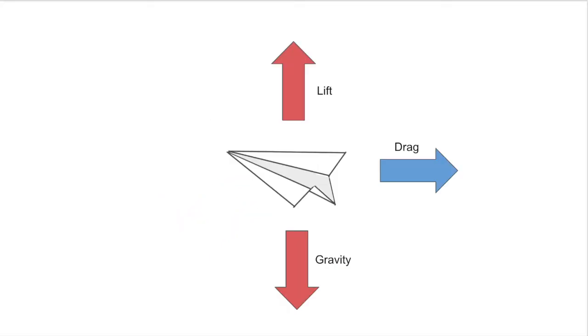The third force acting on a paper airplane is drag. Drag is what pushes the plane backwards. It's basically air resistance, and it slows the plane down.